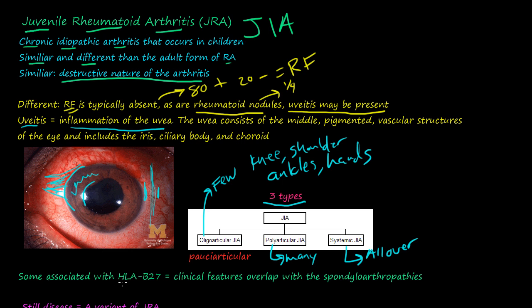Some cases are associated with HLA-B27, which is actually really specific for the spondyloarthropathies that we'll talk about next. So some of the clinical features kind of overlap between the spondyloarthropathies and juvenile rheumatoid arthritis.